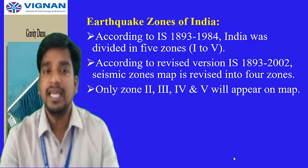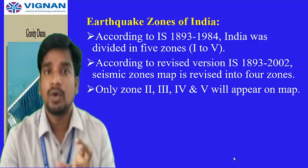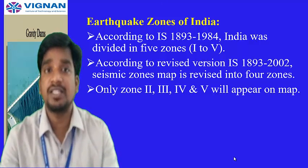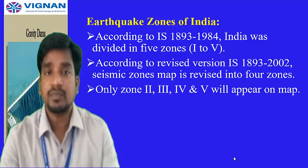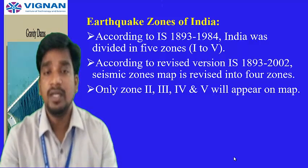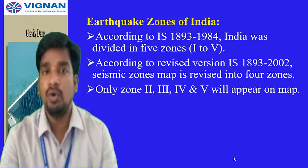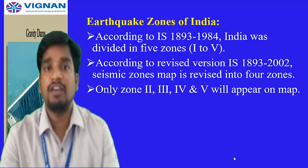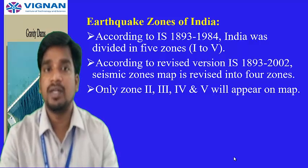According to IS 1893:1984 (the earlier code), there were 5 different zones: Zone 1 to Zone 5. In the latest revised edition of 2002, the 5 zones were reduced to 4 zones, because Zone 1 was merged into Zone 2. So now we have only Zone 2, 3, 4, and 5 — there is no Zone 1 according to the revised code, and these zones appear on the revised earthquake zones map.